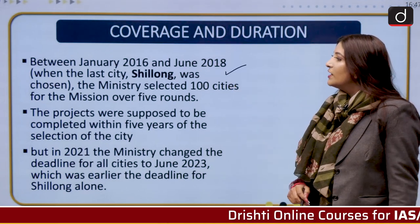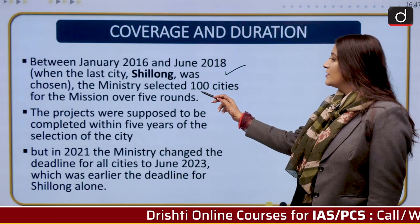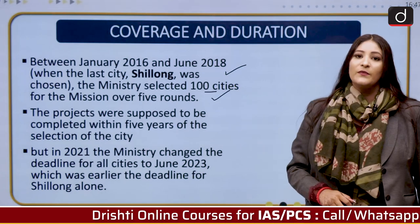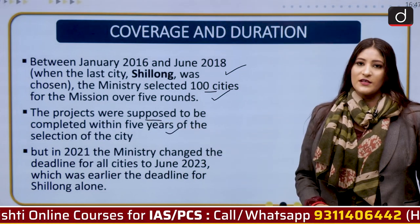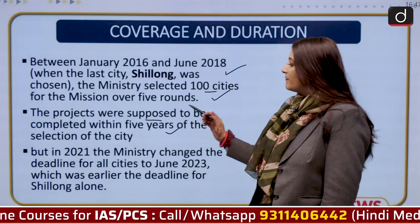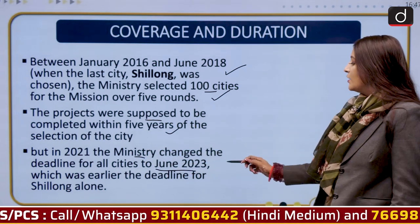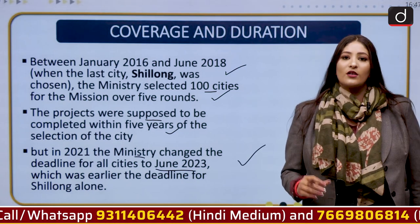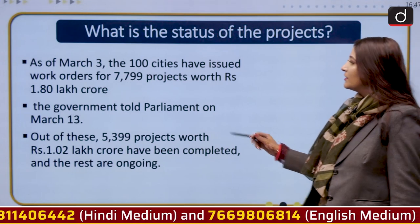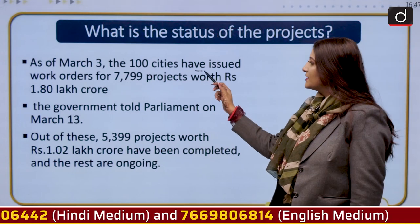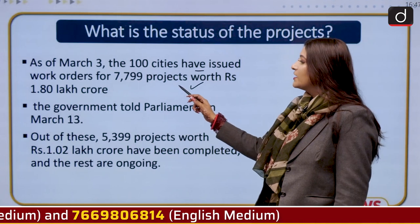Between January 2016 and June 2018, when the last city, Shillong, was added to the list, the Ministry selected 100 cities for the mission over five rounds. The project was originally supposed to be completed within five years from 2015, but in 2021 the Ministry extended the deadline for all cities to June 2023 due to the COVID-19 pandemic.